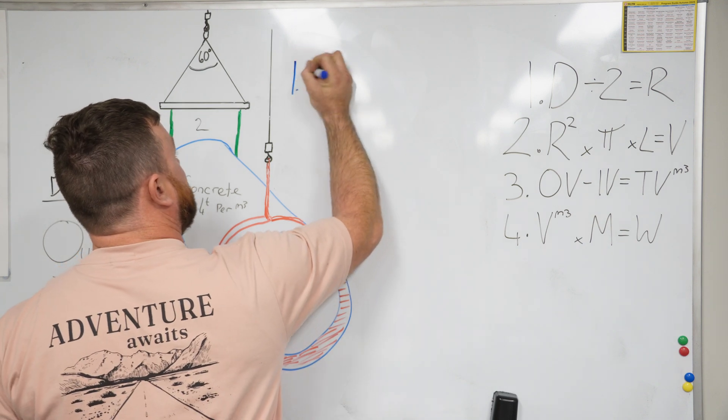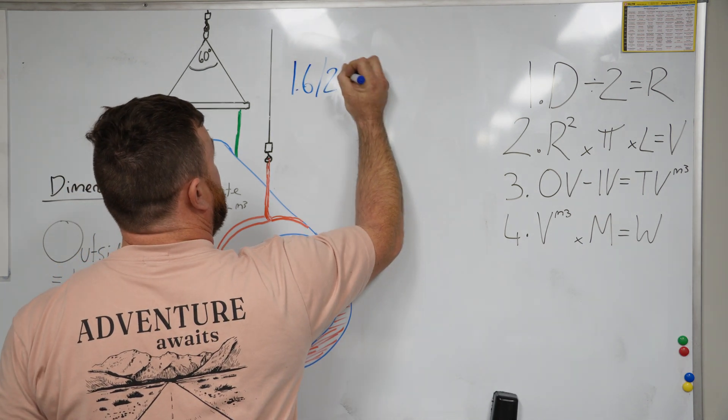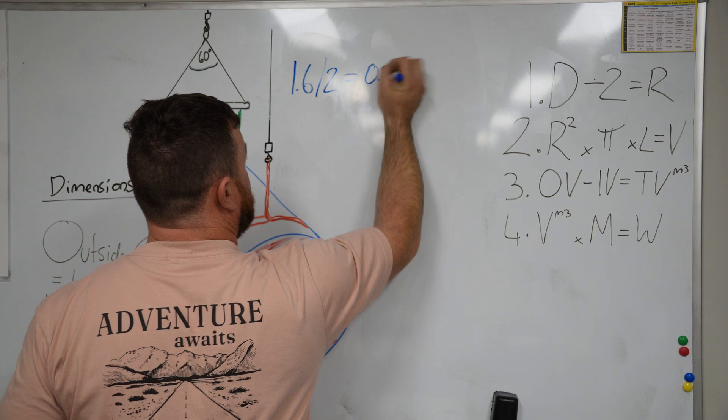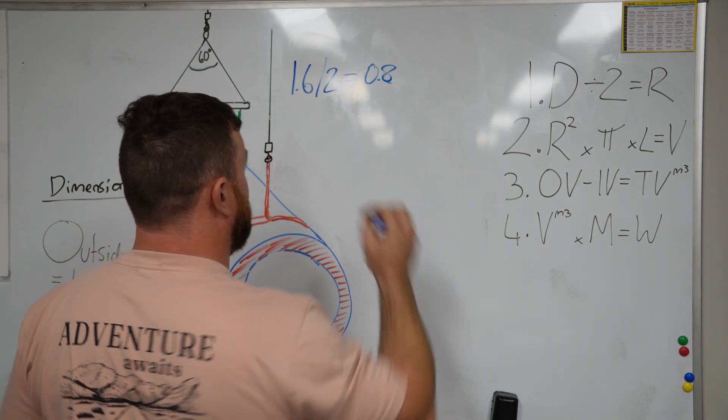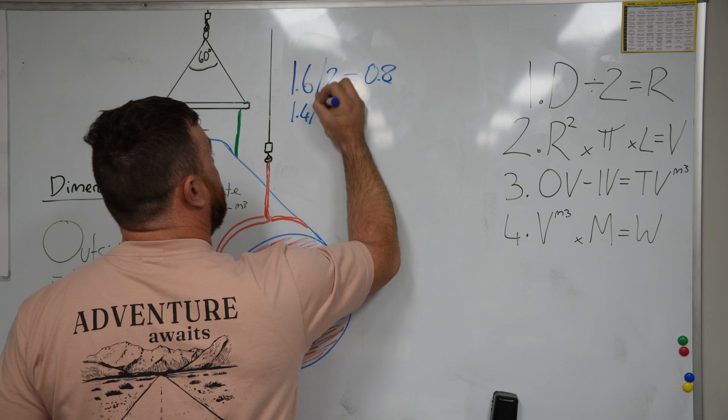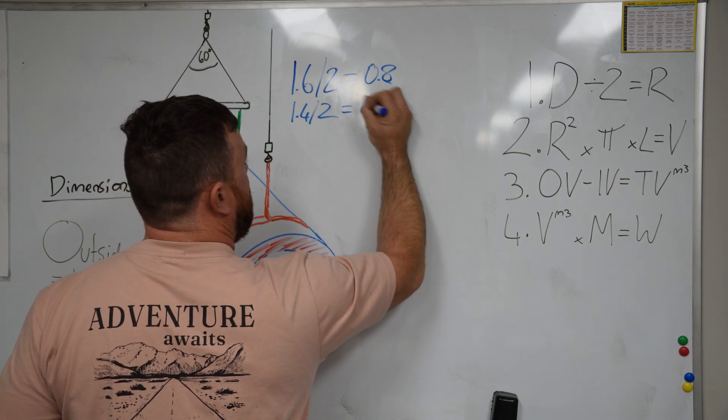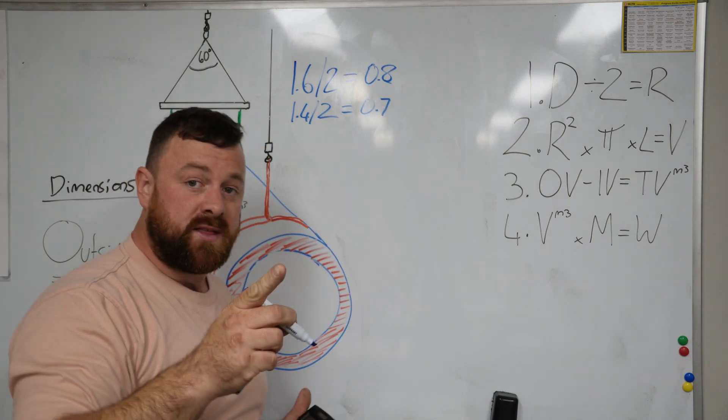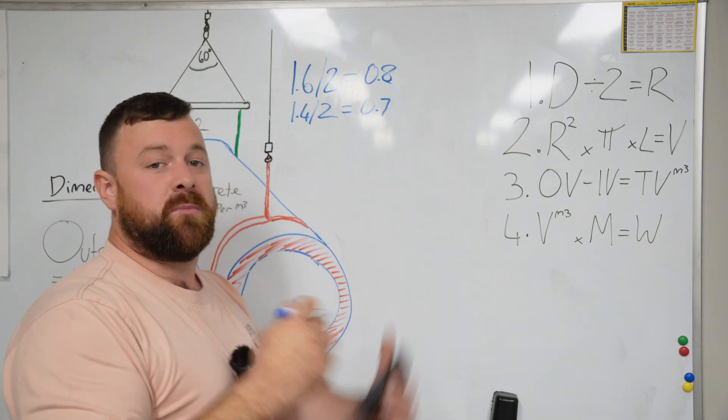So we've got two radiuses here. That's 1.6 divided by 2, which is going to give you 0.8—that's your outside radius. And then 1.4 divided by 2 equals 0.7. Write this down on a piece of paper; it'll help you make sense of how to do this calculation.